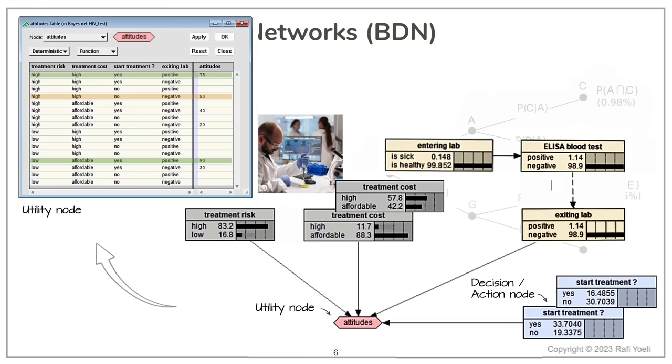The second part, the decision module, is a subjective, intuitive component that includes the element of how convinced the user or person who configured the utility node feels about each of the possible decisions. This really lifts the Bayesian decision network above most other decision support systems, that are either focused on data alone, or on personal feeling alone, neither of which represents the true way that we as humans make decisions.